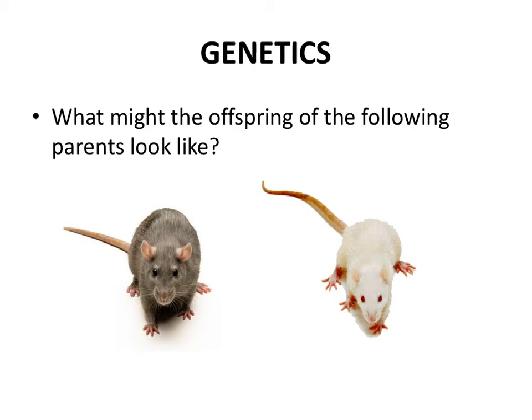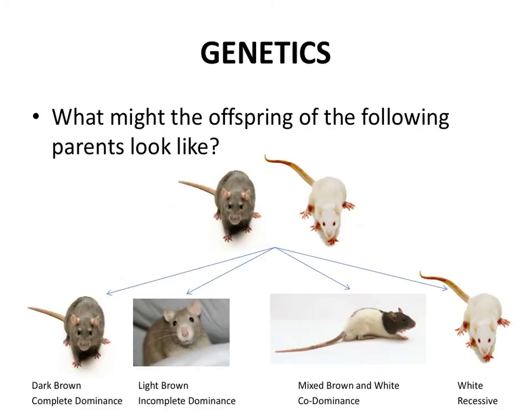Genetics gives us the means to make good predictions about offspring if we know a little bit about the parents. For example, by looking at a mama rat and daddy rat, there are a number of potential outcomes or traits that their offspring can have. Just know that there are a lot of inheritance patterns, and genetics can be complicated because it always involves a combination of genes from mom and dad. It's the interaction of these genes that will really determine the outcome of the offspring.